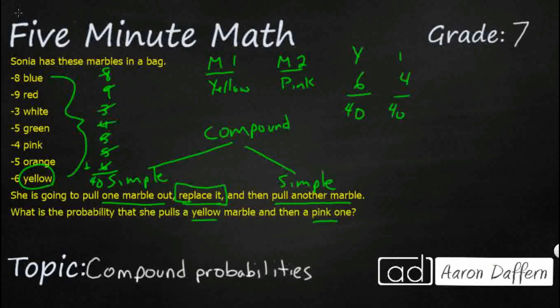Now, how do you find, these are two simple events right here, the 6/40ths and the 4/40ths, but when you put them both together, it's a compound event. What do we do? It's very simple. We multiply.